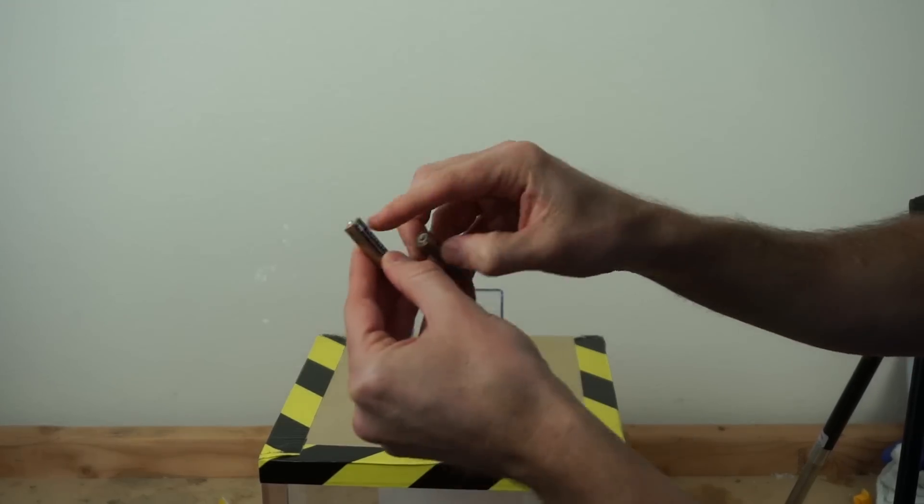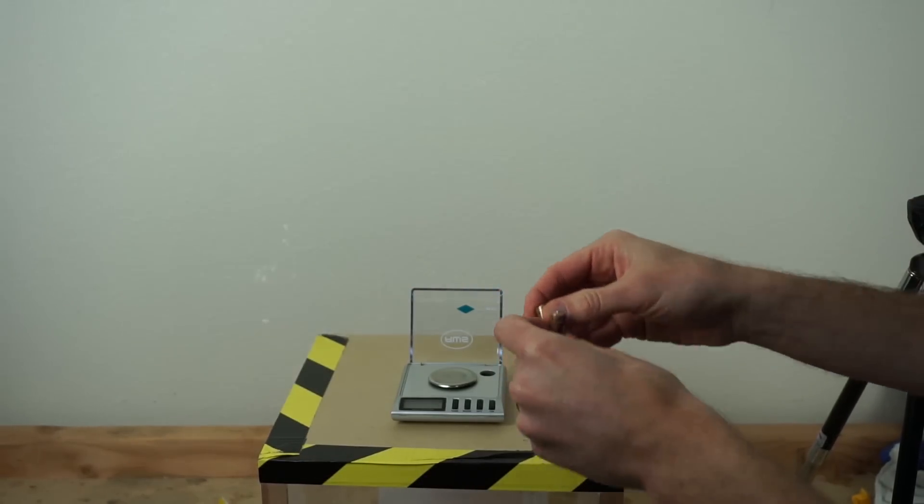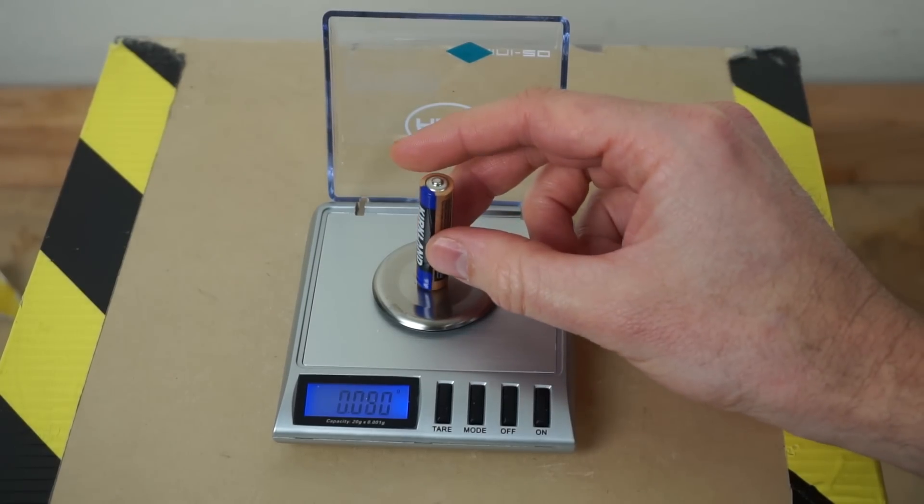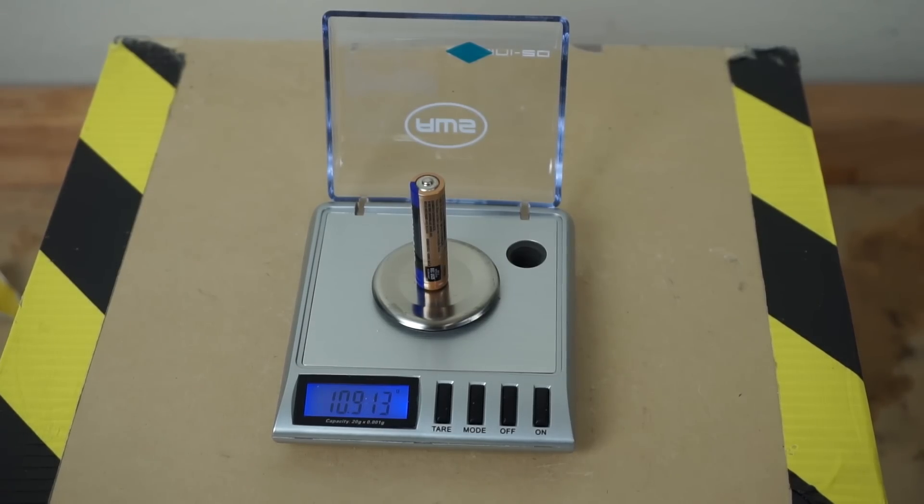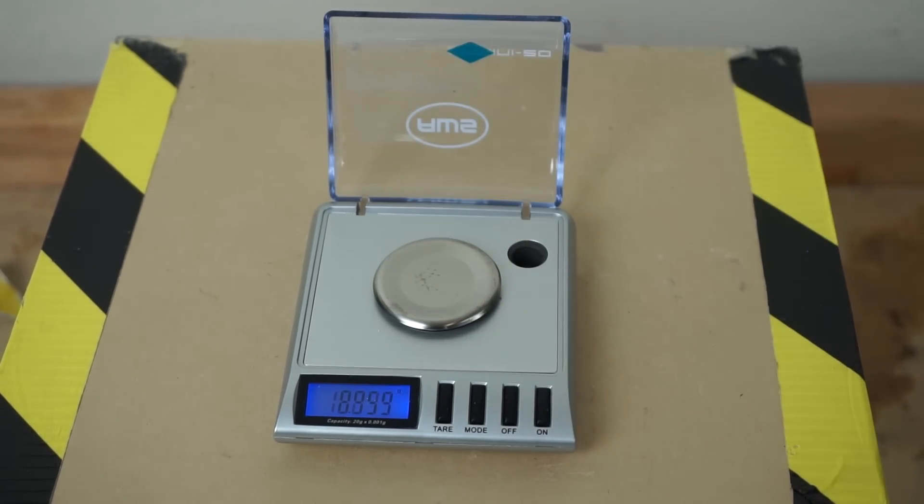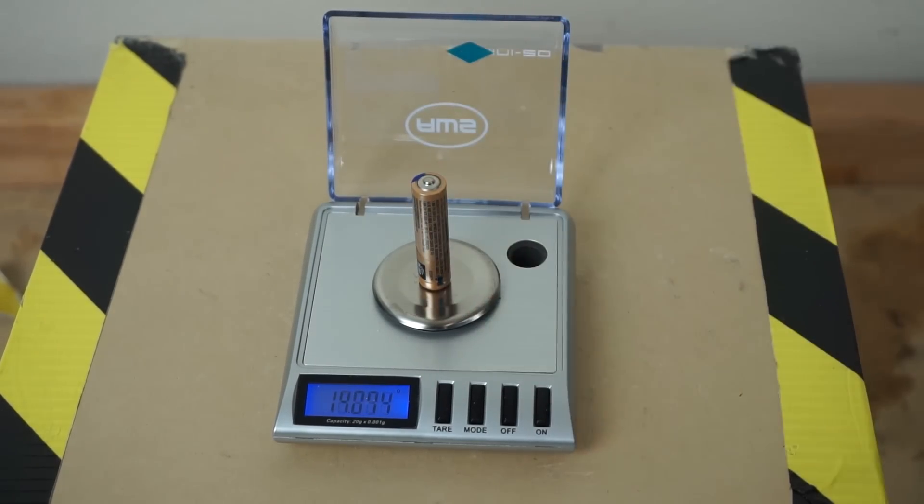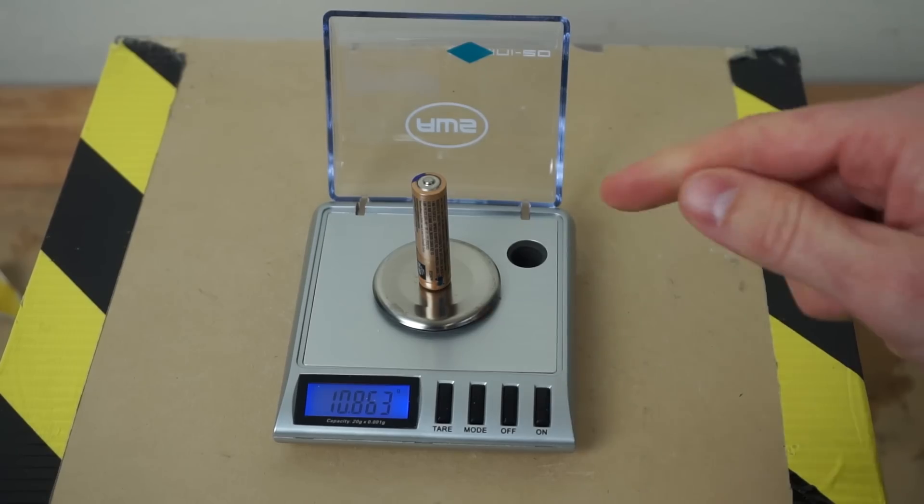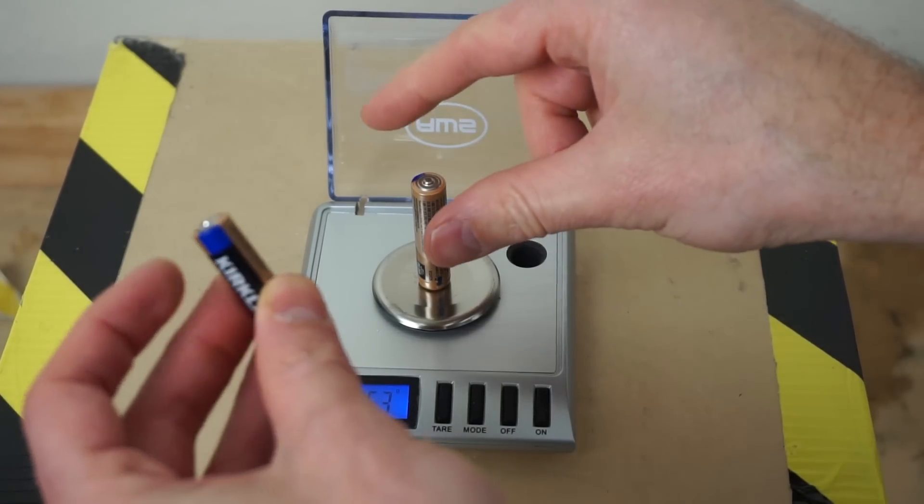So I have two batteries here. I've labeled them number one and number two. So let's see how much these weigh. So number one weighs 10.913 grams and this is fully charged. And then number two weighs 10.863 grams fully charged. So now let's discharge these and see how much they weigh.